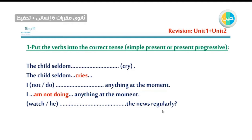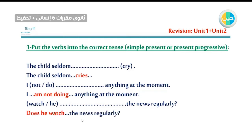Number eight: 'Watch he the news regularly?' — make a question. The word 'regularly' tells us it's present simple — habit or routine. The suitable helping verb for present simple questions is 'do' or 'does.' With 'he,' we choose 'does.' Does he watch the news regularly? Notice it's 'watch,' not 'watches,' because we already have 'does.'